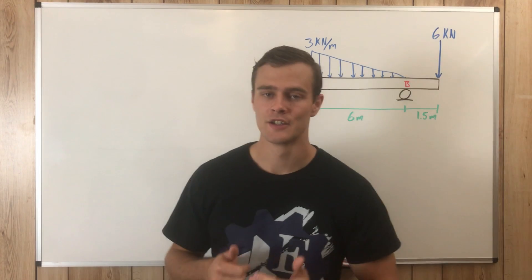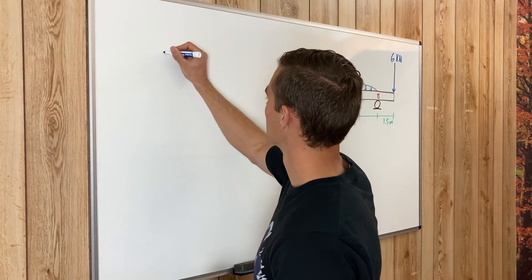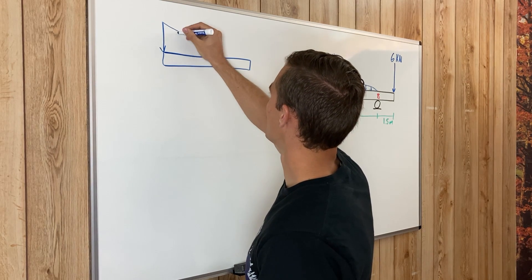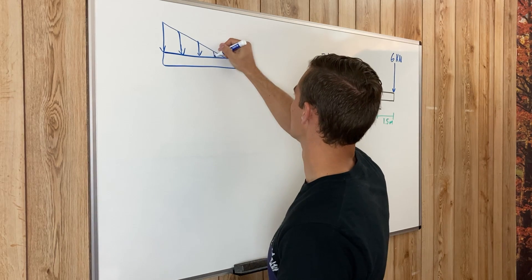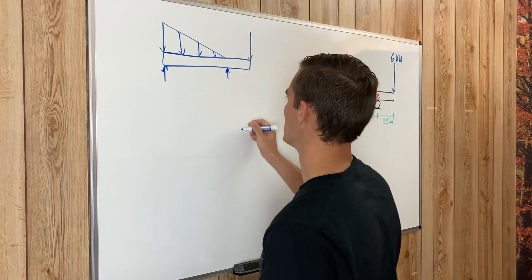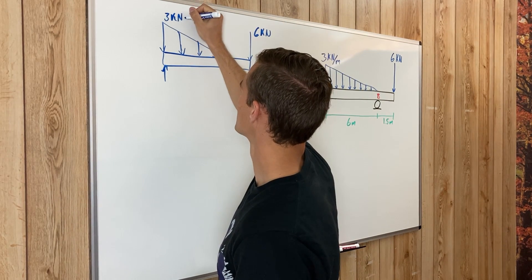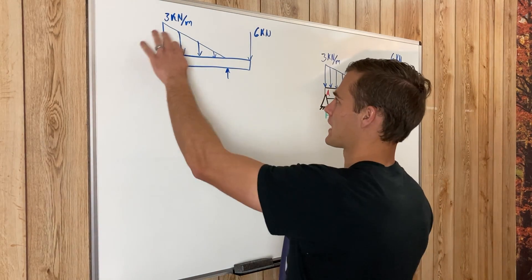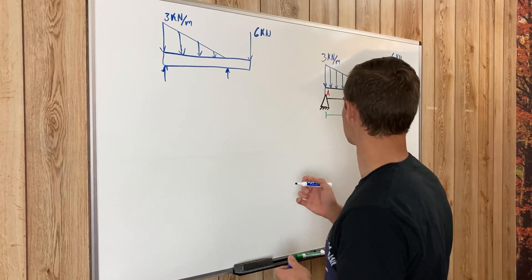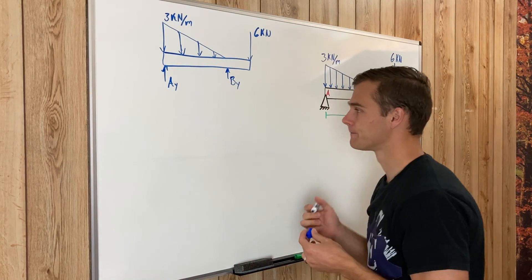The first thing we need to do, like with all shear moment diagrams, is draw a free body diagram to begin with. So we have our beam here, we have our triangular distributed load — draw that kind of accurately — and then we have our point load right here and our reaction forces at A and B. This is six kilonewtons and this is three kilonewtons per meter, meaning this side of the triangular distributed load is three kilonewtons high.